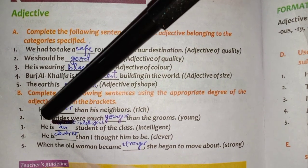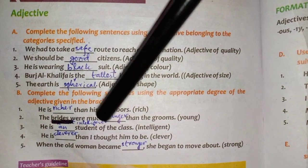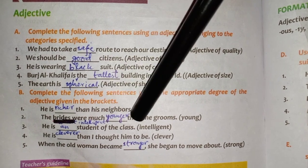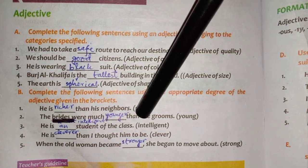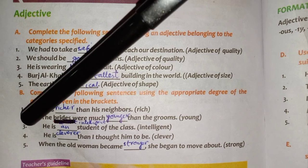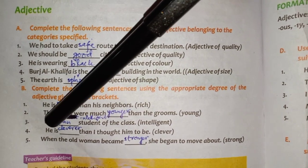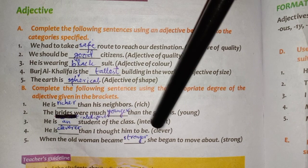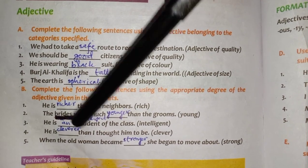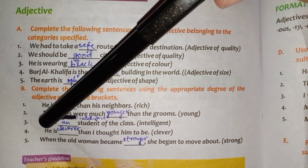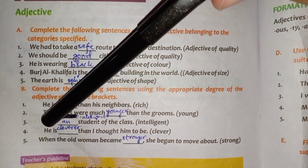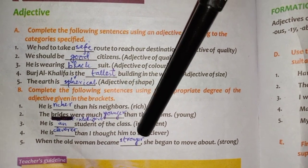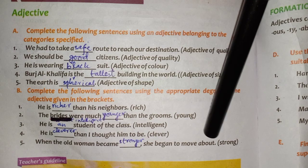Then: he is dash of the class — he is an intelligent student of the class. Part four: he is dash than I thought him to be — clever. Again a comparison over here. Part five: when the old woman became stronger, she became able to move about.